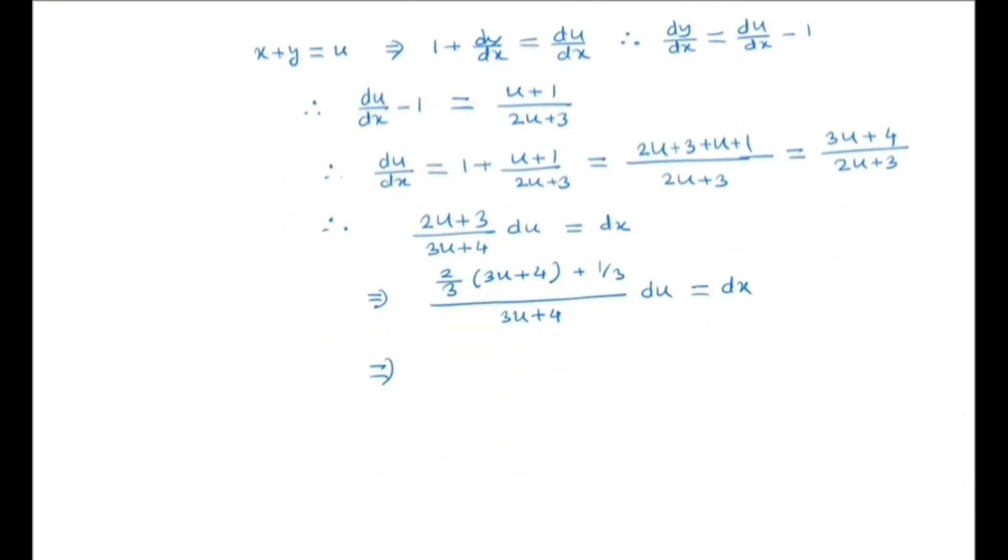So we have 2/3 plus 1/3 times 1 over 3u plus 4, du equals dx. Now take integral both sides. So we have on the left hand side, integral will be 2/3 u plus 1/3 times 1/3, because here we have 3u plus 4. So ln of 3u plus 4 equals x plus C.